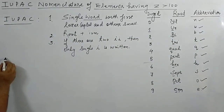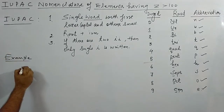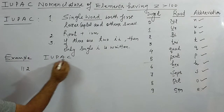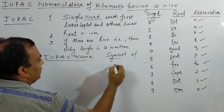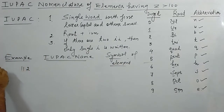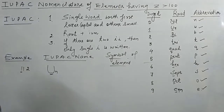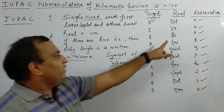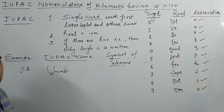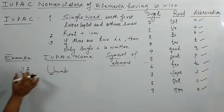Now let's see some examples. First example: atomic number 112. The digits are 1, 1, 2. For the first 1 we write un (capital U, small n), for the second 1 we write un again, and for 2 we write bi. So the root is un-un-bi, and then we add IUM at the end.